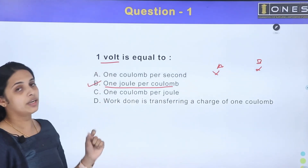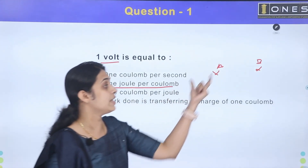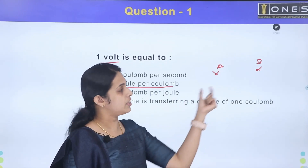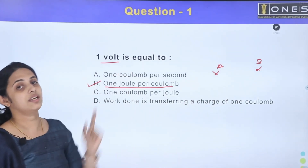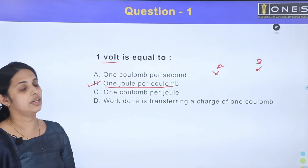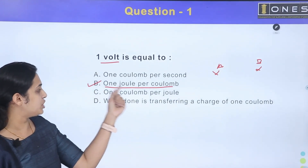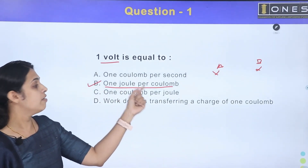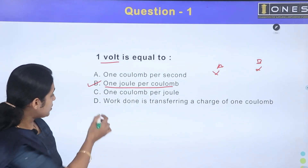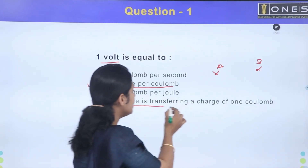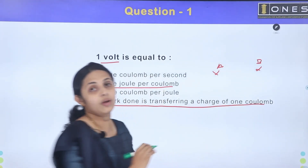1 joule of work is done in transferring 1 coulomb of charge from A to B — the potential difference is 1 volt. Option B is 1 joule per coulomb. Option D is the work done in transferring a charge of 1 coulomb.